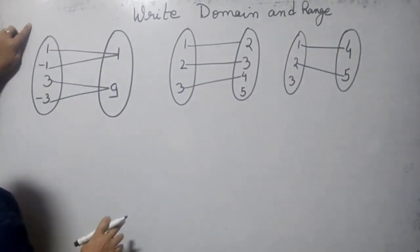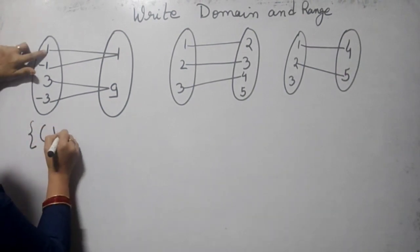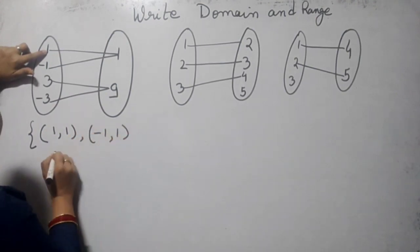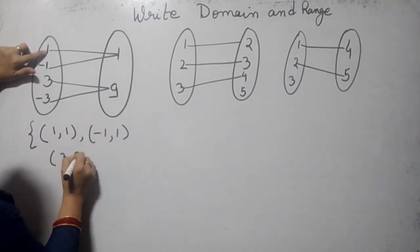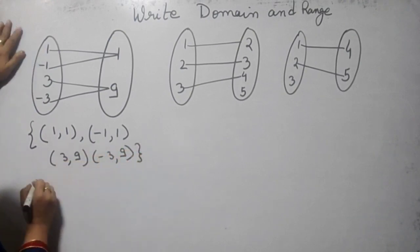Now in this case, what is the set? 1 comma 1, minus 1 comma 1, 3 comma 9, minus 3 comma 9. Now domain: